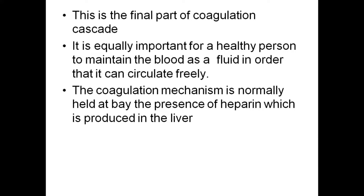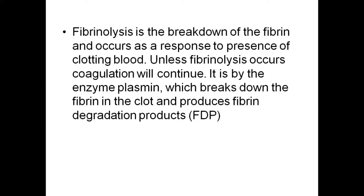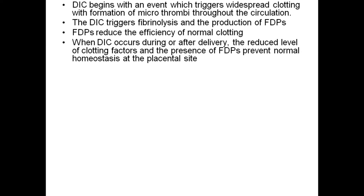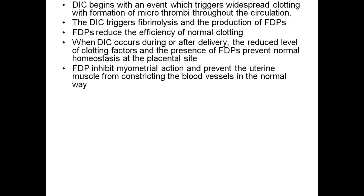Normally blood clotting occurs in three stages. When tissue is damaged, thromboplastin is released. In the presence of calcium, the thromboplastin converts prothrombin into thrombin. This thrombin converts fibrinogen into fibrin. This fibrin forms long sticky strands which engulf the blood cells to establish a clot. The coagulatory material contracts and expels the serum, which is plasma depleted of its clotting factors. This is the final part of the coagulation cascade.